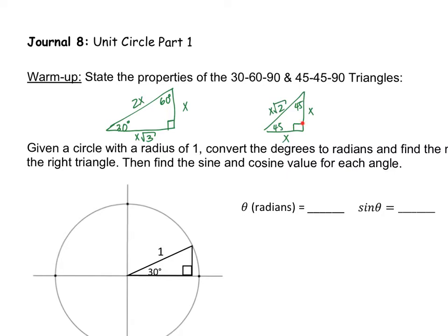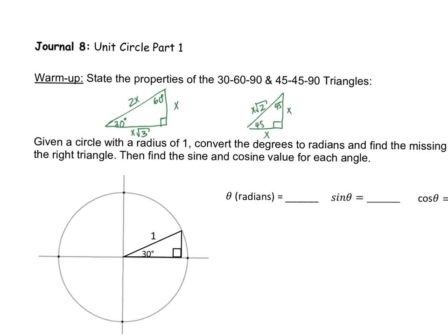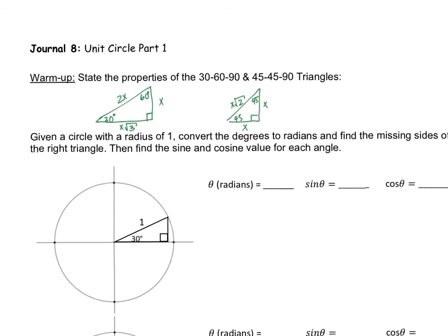So if I know what one side is, I can figure out all the other sides. Now let's get into why we need to know these types of triangles so we can understand how the unit circle is built.